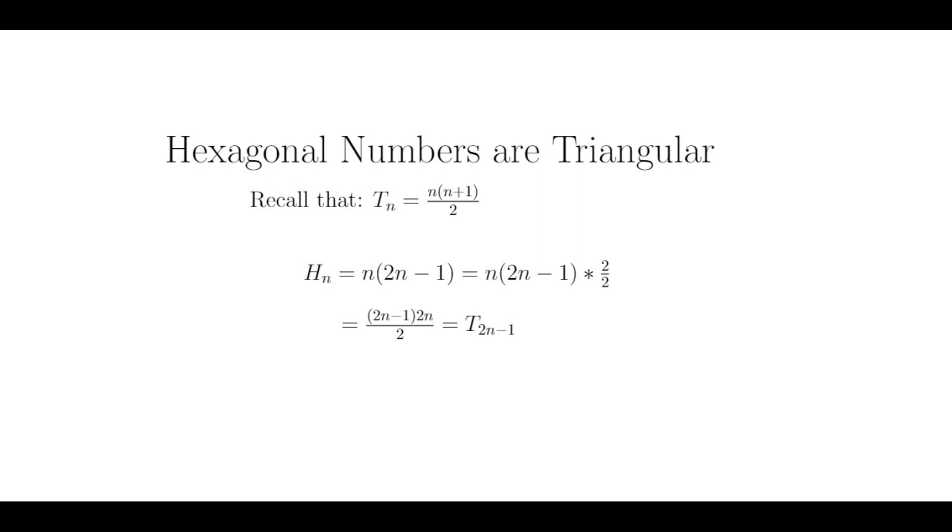The first property I will discuss is that every hexagonal number is also a triangular number. This is a straightforward proof using a little algebra. Recall the formula for the nth triangular number. Now we use our formula for the nth hexagonal number, write it as a fraction, and multiply top and bottom by 2.